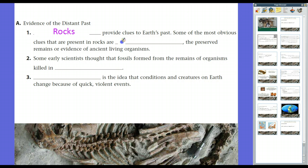Some of the most obvious clues that are present in rocks are what we call fossils. This is really important. Fossils, the preserved remains, are evidence of ancient living organisms. That's not to say that fossils aren't being made now. The processes that form fossils still take place today. But what we're finding right now are formerly living things, tens of thousands all the way back to millions of years ago.